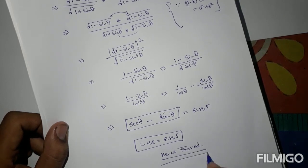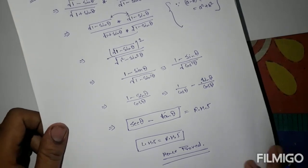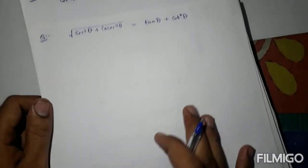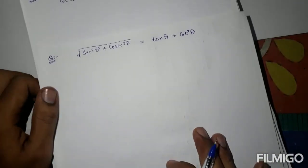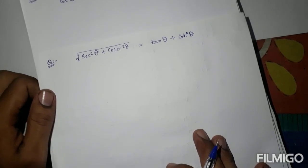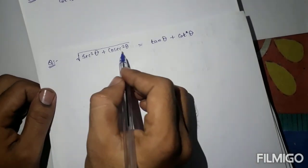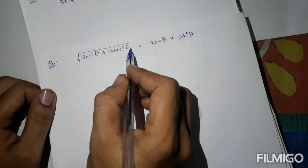Now the next question is: the square root of (sec²theta plus cosec²theta) is equal to tan theta plus cot theta.